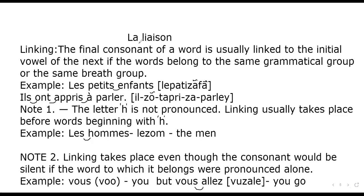La liaison — linking. The final consonant of a word is usually linked to the initial vowel of the next word if the words belong to the same grammatical group. For example: les petits enfants — here the s is linked to the next e and pronounced like z. In the phrase elles ont ta-pris à parler, the s is linked to o, the t is linked to a, and the s is linked to a.